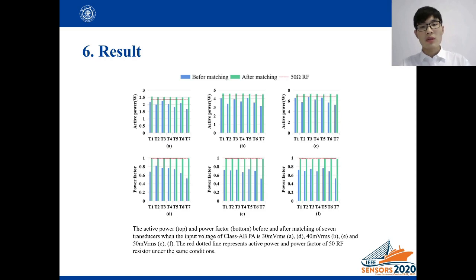This slide shows the comparison before and after matching under the class AB power amplifier. The mean active powers of the 7 transducers have been increased by 25%, 25%, 25%, and 18%. And the mean power factors have been increased by 40%, 44%, and 41% with a dynamic impedance matching network under the conditions of 3 inputs of class AB power amplifier.